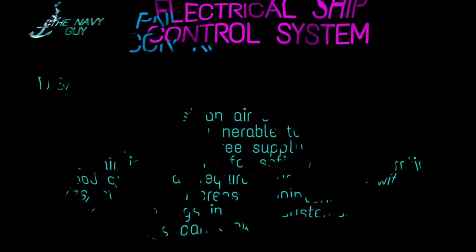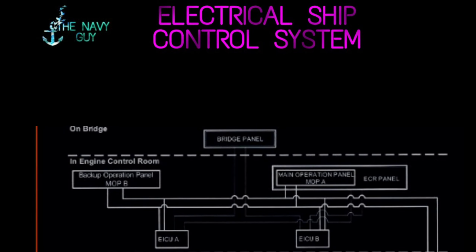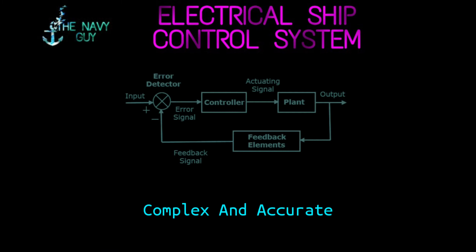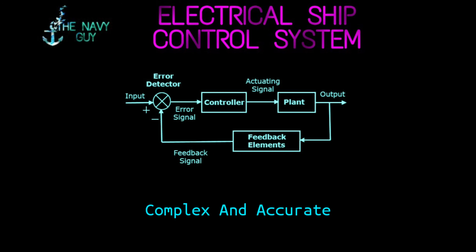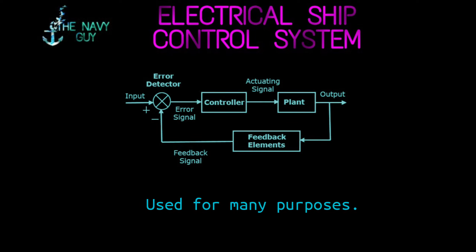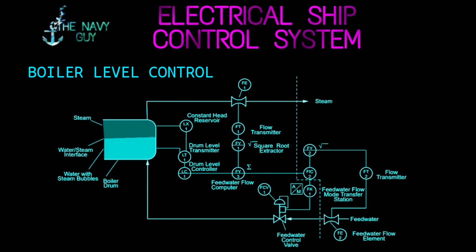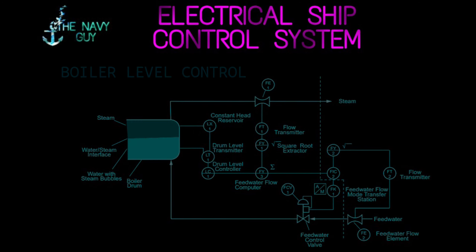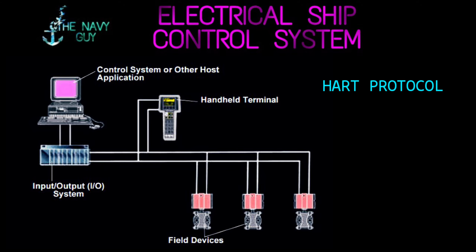The electrical ship control system involves a complex system of cables and controllers. The widely used controller is PID control — it is the most accurate controller in the industry and has been used in many systems, for example boiler level controllers and turbine ship control. One of the latest developments includes HART control, in which all controllers are wireless and system settings are remotely controlled.